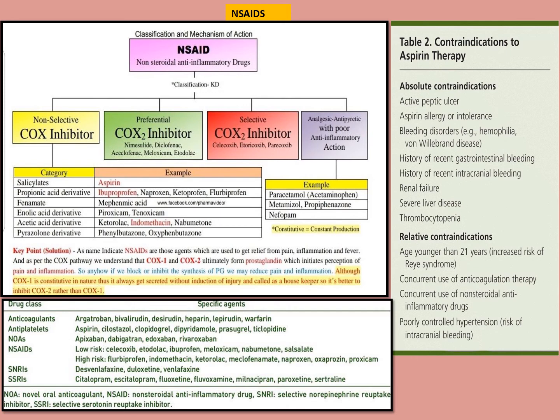Contraindications to aspirin therapy include active peptic ulcer, allergy to aspirin, bleeding disorder, recent GI bleeding, severe liver disease, kidney failure, and thrombocytopenia. A relative contraindication is children or adults younger than 12 years because aspirin can cause Reye's syndrome. Patients already using NSAIDs or anticoagulant therapy should not take aspirin either, as it blocks TXA2 so platelets will not aggregate, increasing the chance of bleeding.